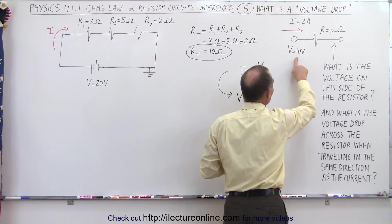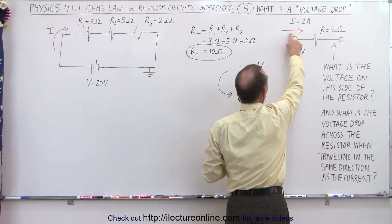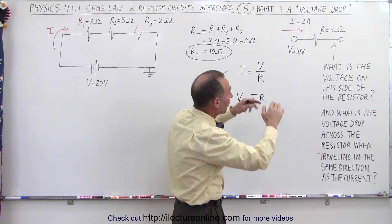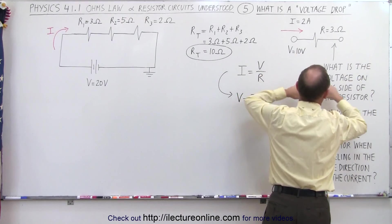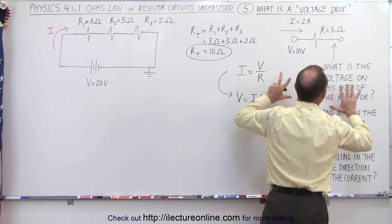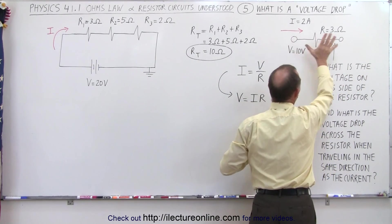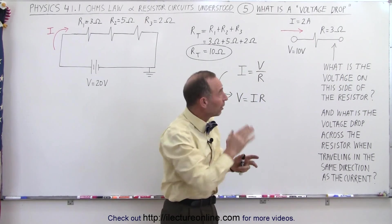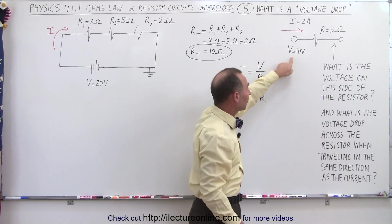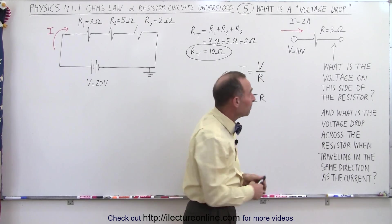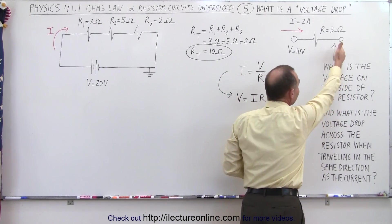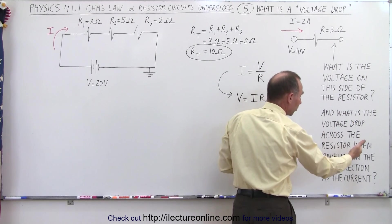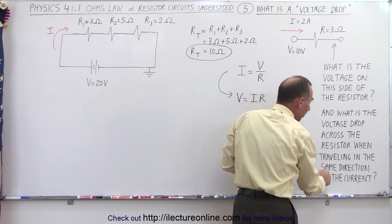Let's say that on this side the voltage is 10 volts and a current of 2 amps is flowing. That couldn't happen unless this was a complete circuit, so we're assuming there's another part of the circuit we're not seeing. If a current of 2 amps was flowing through that resistor and on the left side we had 10 volts, the question is: what is the voltage on the right side and what is the voltage drop across the resistor?